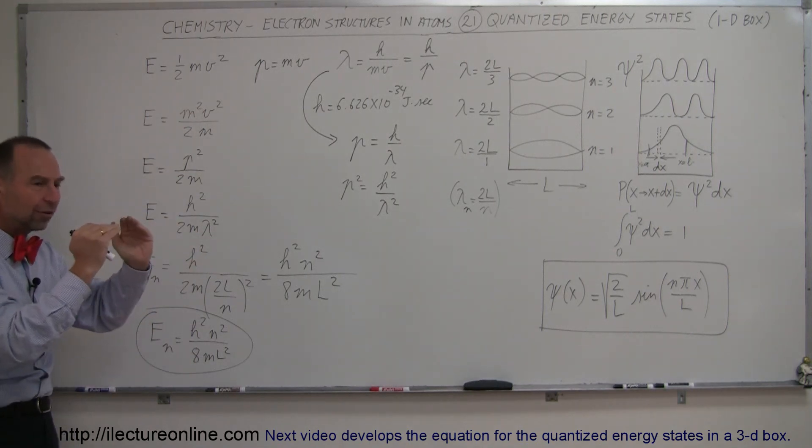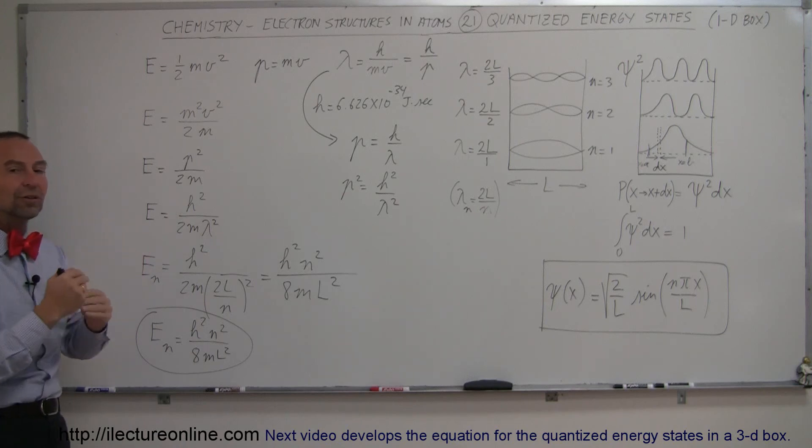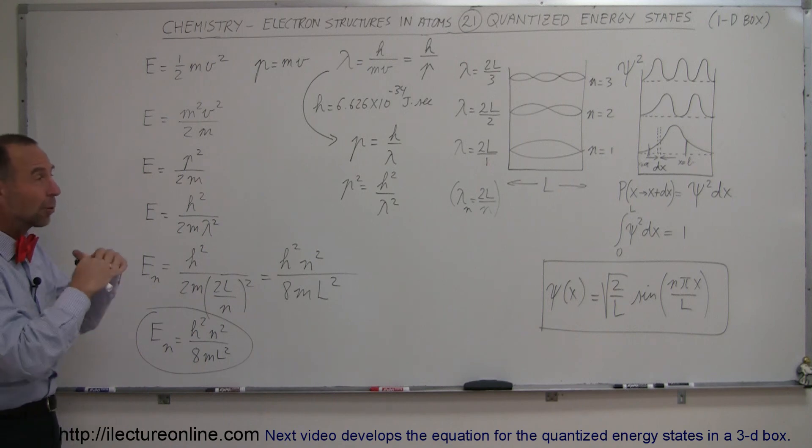And then we're going to be restricted by quantized energy levels. So, electrons can only exist in certain levels due to the quantization of the energy that they can possess. And that's going to be the basis of defining how electron structures look like in atoms.